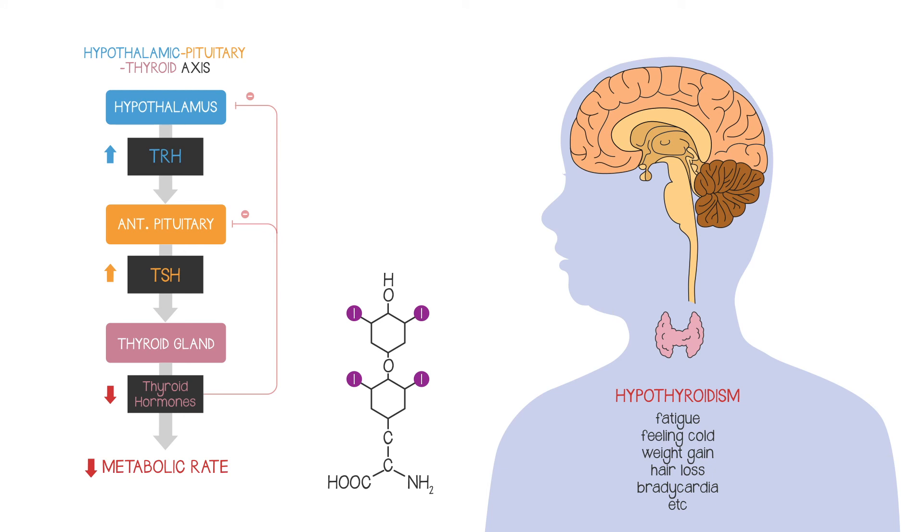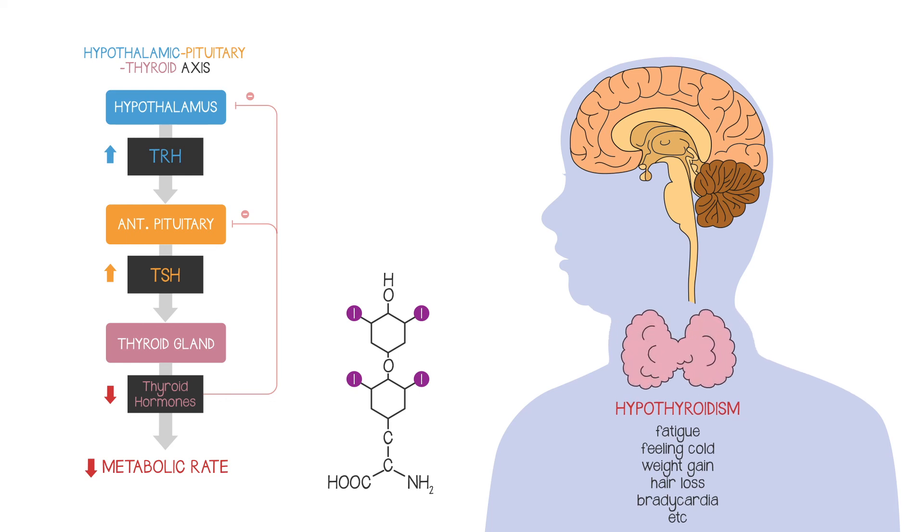TSH is thyroid stimulating hormone, but although this stimulates the thyroid gland, it won't increase thyroid hormone production because you're out of iodine. But what it will do is to stimulate the thyroid gland to expand greatly in size, giving you a characteristic swelling in the neck called a goiter.